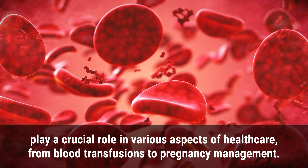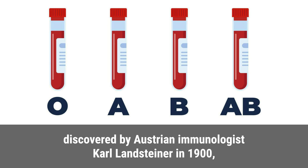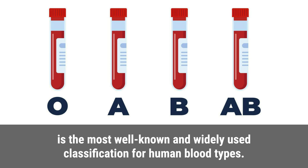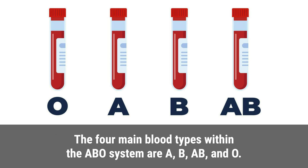The ABO blood group system, discovered by Austrian immunologist Karl Landsteiner in 1900, is the most well-known and widely used classification for human blood types. It is based on the presence or absence of specific antigens on the surface of red blood cells. The four main blood types within the ABO system are A, B, AB, and O.